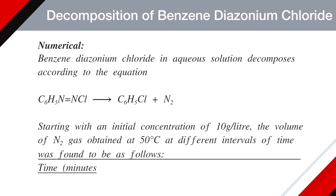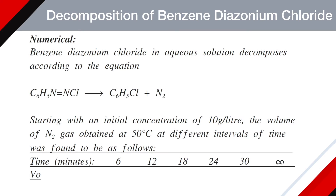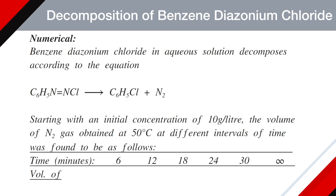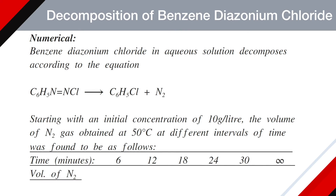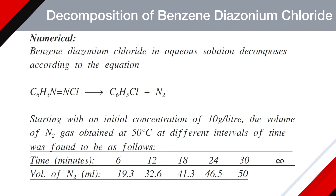Times given in minutes: 6, 12, 18, 24, 30, and infinite. Volume of nitrogen gas collected in millilitres: 19.3, 32.6, 41.3, 46.5, 50.4, and 58.3.